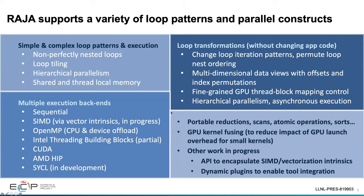Starting with Raja: it's a collection of abstractions for loop-level patterns and parallel constructs. There's support for simple and complex loop patterns and executions, and support for multiple backends — for example, sequential, OpenMP, CUDA, and HIP. Through Raja, there are capabilities to do loop transformations without changing application code, such as changing loop iteration patterns and permuting loop nest ordering. There's also support for portable reductions, scans, atomic operations, and sorts, along with additional tools to help improve general application performance.